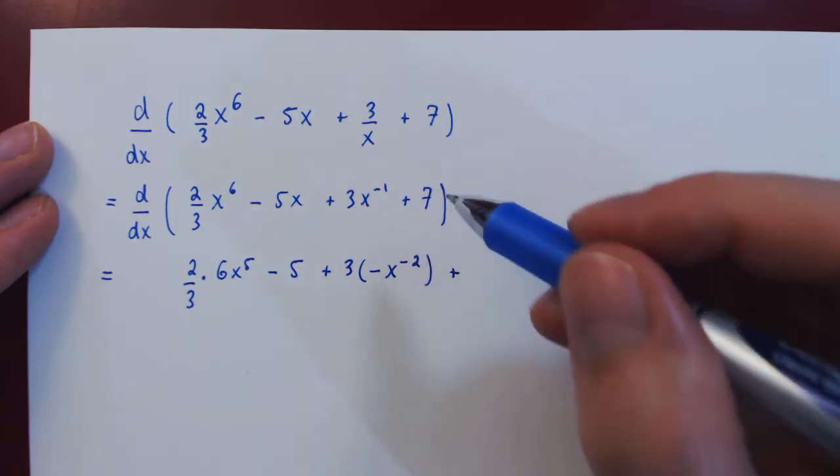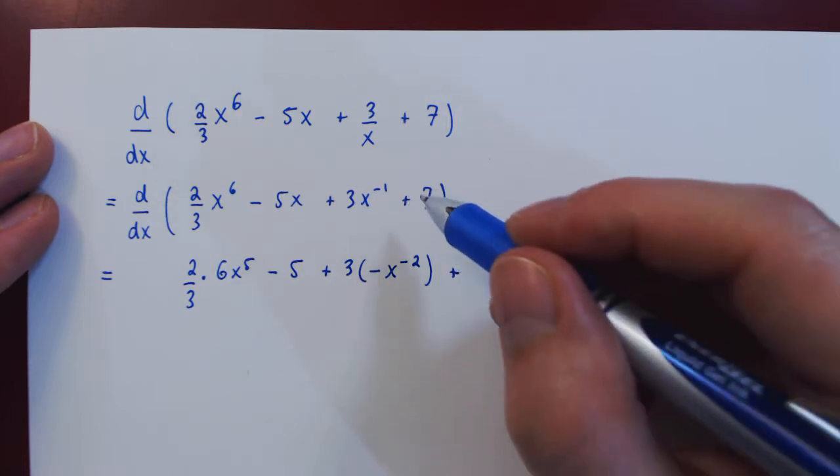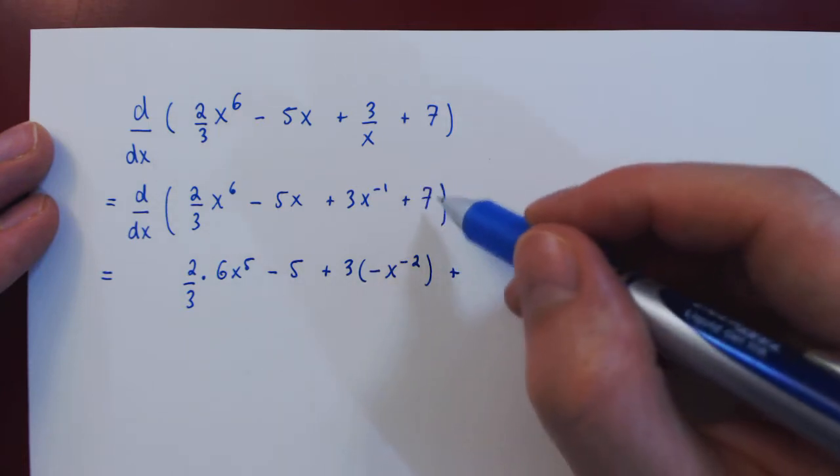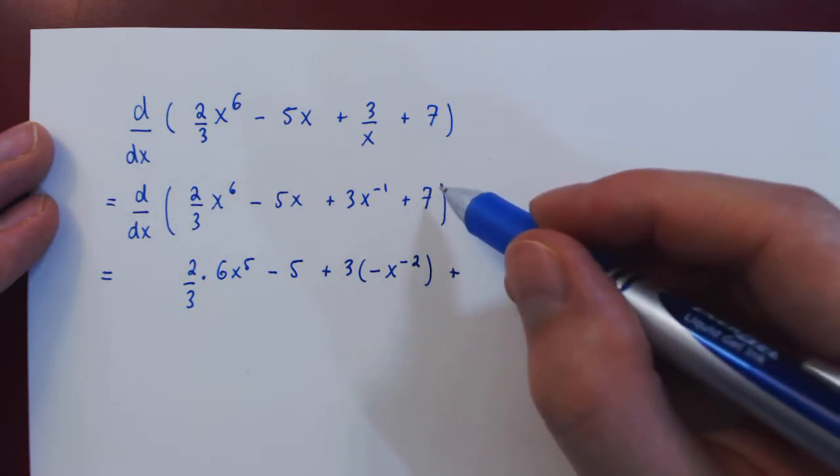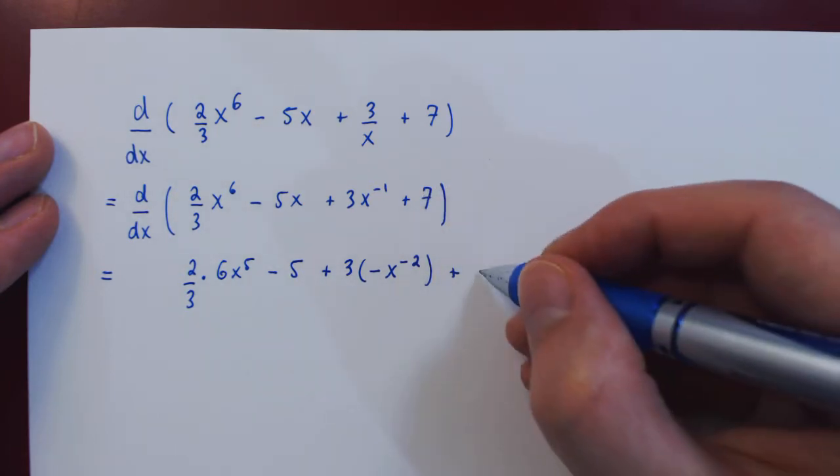And now 7 here is not a constant multiple, but it is on its own a constant. The derivative of a constant, without being multiplied by some other function of x, is simply 0.